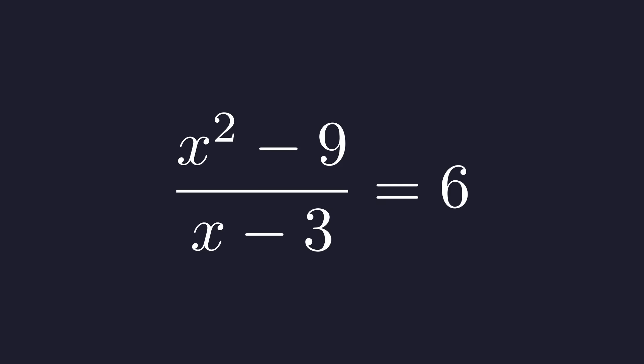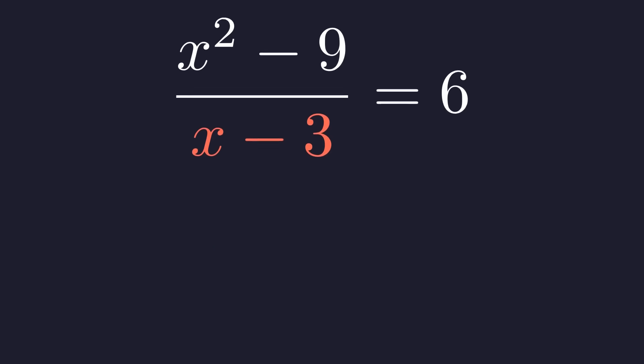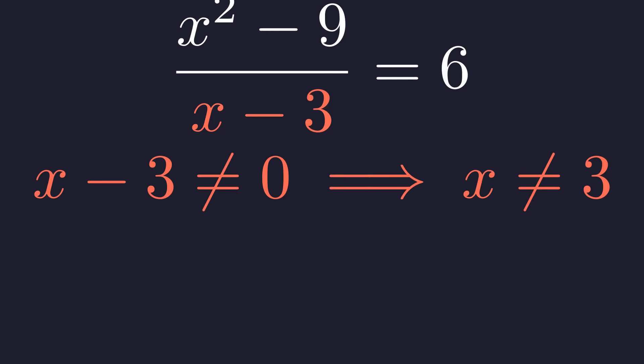You can never divide by zero, which means the denominator can't be zero. Look at this denominator, x minus 3. For the fraction to make sense, this can't be zero, which tells us something important about x.